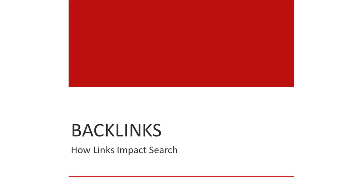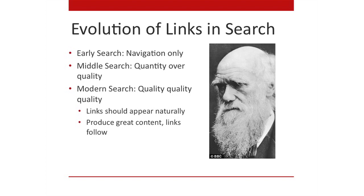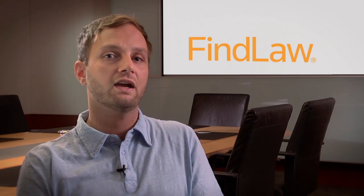Now that we've covered what a link looks like in code, let's talk about backlinks and how links impact search. A backlink is simply an incoming hyperlink from one web page to another. In early search, hyperlinks were used for navigation only. In middle search, hyperlinks were used to quantify authority — quantity over quality, the more links the better. In modern search, it's all about quality. Two great backlinks outweigh 250,000 poor ones. You want to get those backlinks by producing great content so people organically link back to you.